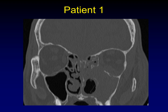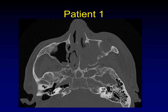Here's patient number one. This is a coronal CT, and you can see that the left maxillary sinus is completely filled, and something is spilling out into the nasal cavity. Here's an axial image on patient number one, where you can see the effect that the mass is having on the medial maxillary sinus wall.